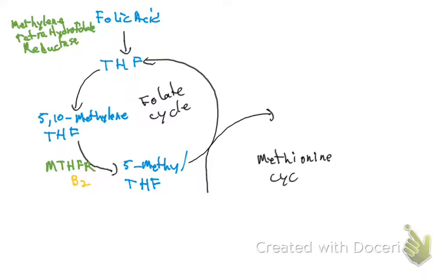The methionine cycle and the tetrahydrofolate cycle share an enzyme in common, and this enzyme is called methionine synthase. Methionine synthase uses vitamin B12 to carry out its function.